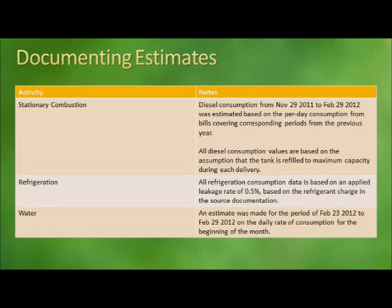Here are some examples of typical statements of estimates in a carbon footprint report for different source activities. Note that in each case, you will find the time periods covered by the estimate, the specific fuel or consumption material, and the method of estimate that was used.